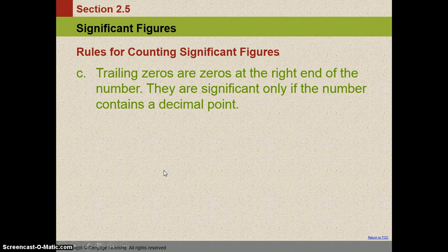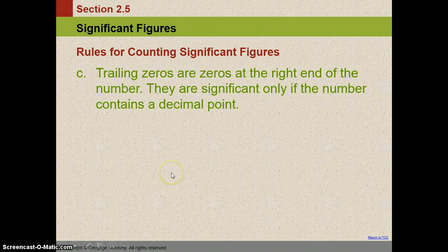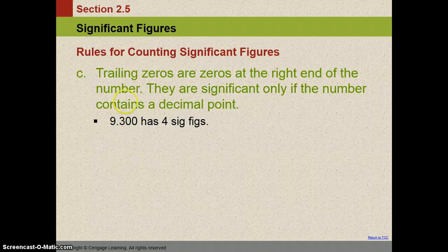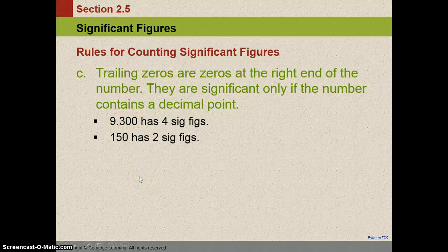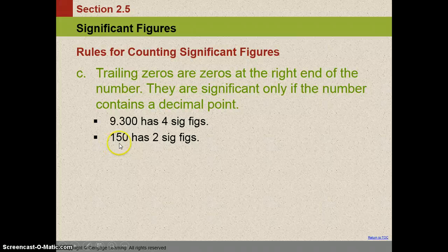Then you have trailing zeros. And these are zeros at the right end of a number and sometimes they're significant and sometimes they're not. So 9.300, these two are following the decimal point and they're following a non-zero digit so they are significant. So there's four: one, two, three, four. This number, you don't see the decimal point. So the one and the five are the only two significant figures in this number. The zero is just a placeholder.